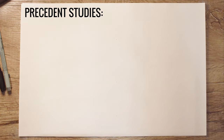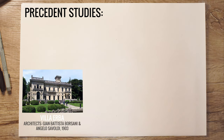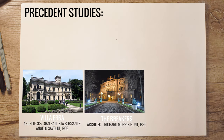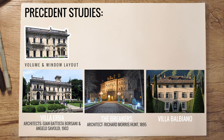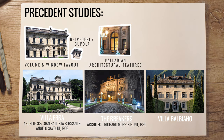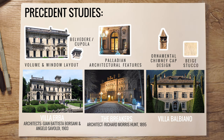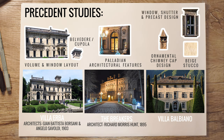Let's take a look at some precedent studies that I used to get my idea. We have Villa Erba, The Breakers, and Villa Balbiano. For Villa Erba I used the volume and the window layout for the rear facade — you can see it's kind of similar to what I did. Also the belvedere and cupola they have with three arcs, that's what I used in my cupola. For The Breakers they have a Palladian architectural feature with the door in the middle and the two windows on the left and right, so I used that in mine. And Villa Balbiano has the ornamental chimney caps and the beige stucco, plus those windows with shutters and that precast detailing that I used.